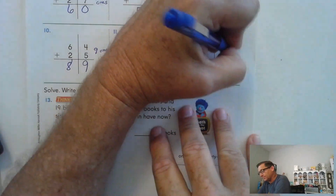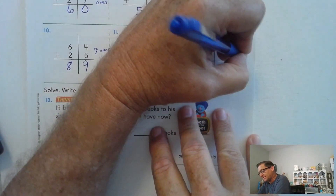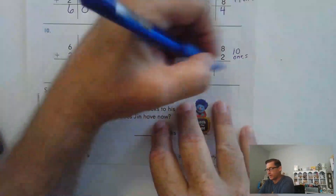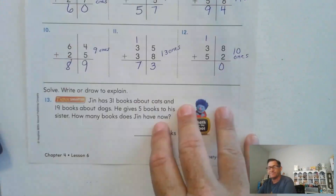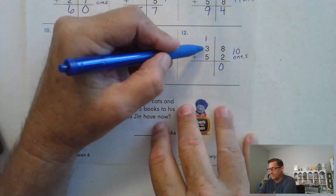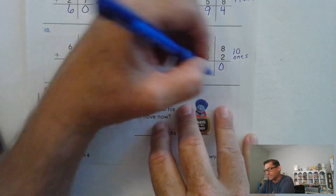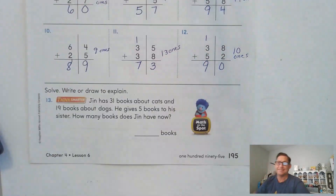8 and 2 — I know that makes a 10, so I'm going to trade all those ones for a 10. 5 and 3 is 8, plus 1 more is 9 tens.